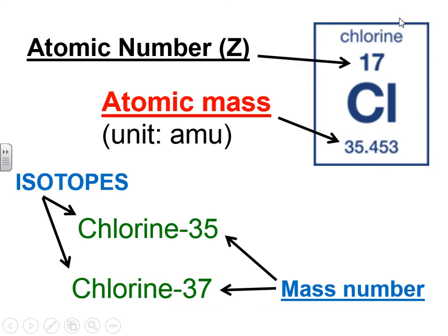To remind you, we talked about atomic number last time, which is the number of protons, and it's listed on the periodic table as the whole number above the element. Today we're going to talk about the atomic mass, which is another number that you see on the periodic table, and that's usually below the element.